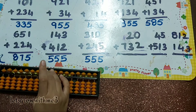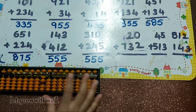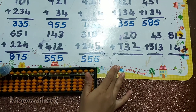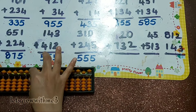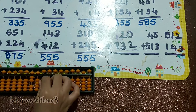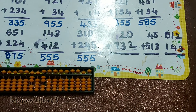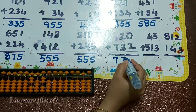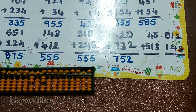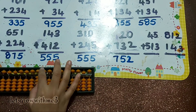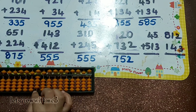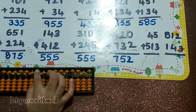Next one: 20 plus 732. So 7 in hundreds, plus 3 here — plus 5 minus 2. 2 here you can add directly. So our answer is 752.